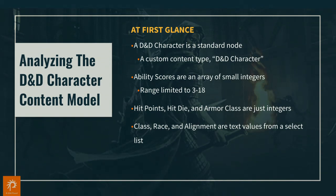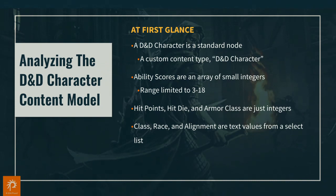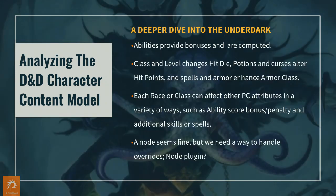Taking a quick look at the actual character content model — not the computational model, but the basic things you want to capture from users. At first glance, a D&D character is just a standard node. We create a custom content type called D&D character. You have ability scores, which are just an array of numbers ranging from 3 to 18. You have hit points, hit die — these are all just integer values. You can very easily slap a field on a node and capture these things. Class, race, and alignment are just items from a select list. Things all look pretty basic until you start doing a deeper dive into the content model.